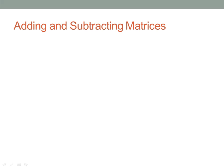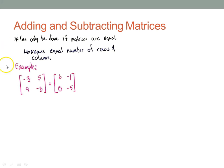And now we're going to go to adding and subtracting matrices. All right, so these can only be done if the matrices are equal. And what I mean by equal is that the number of rows and columns, so they have equal number of rows and columns. So for example, our first example here in bright pink, I have two rows and two columns in my first matrix. I have two rows and two columns in my second.